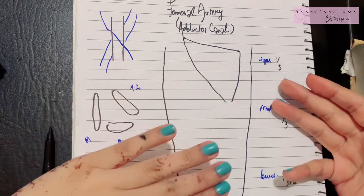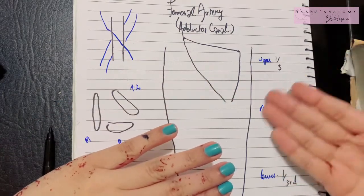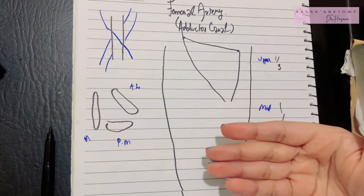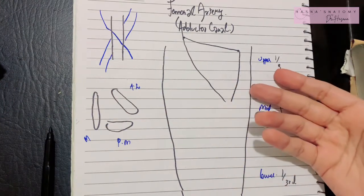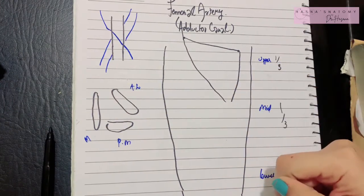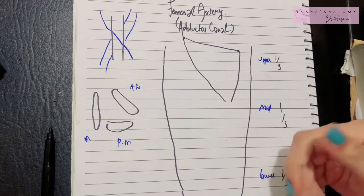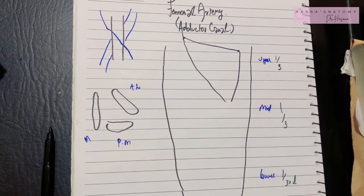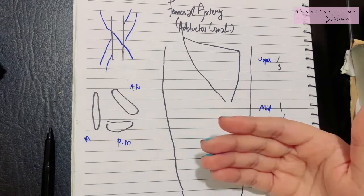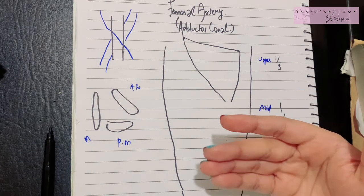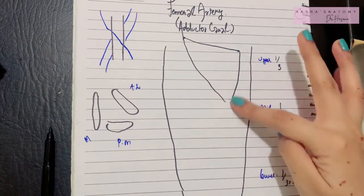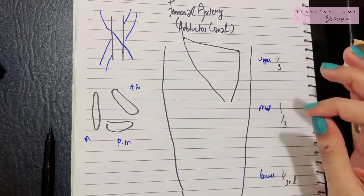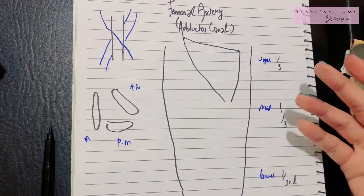Your thigh consists of three compartments: the anterior compartment, the medial compartment, and the posterior compartment. The anterior compartment basically consists of your quadriceps femoris muscles, which are extensors of your knee — so it's the extensor compartment. Posteriorly is the flexor compartment, causing flexion of the knee, mostly occupied by the hamstring muscles.